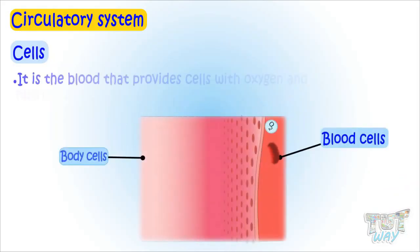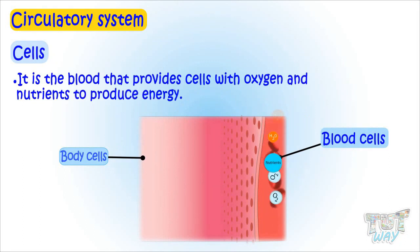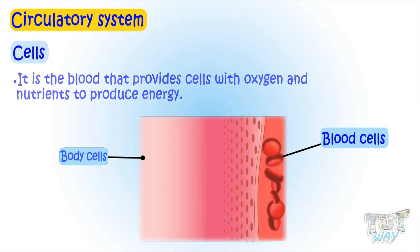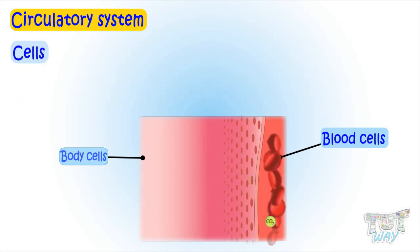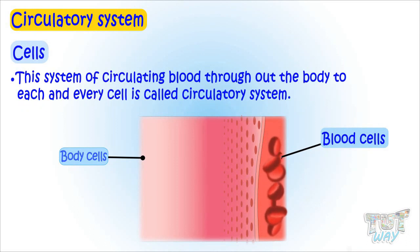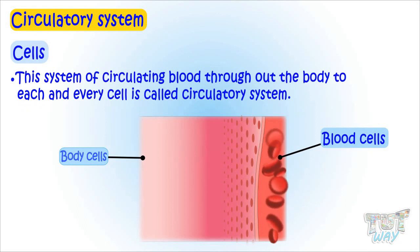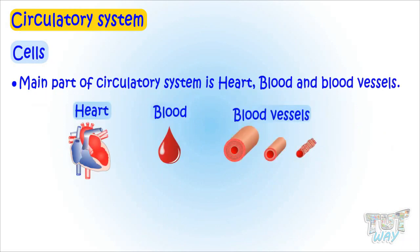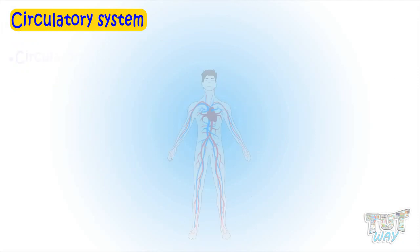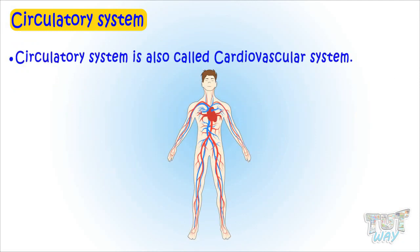It is the blood that provides cells with oxygen and nutrients to produce the energy that we need in our daily lives for every activity. And it's also the blood that removes the waste and carbon dioxide from the cells. This system of circulating blood throughout the body to each and every cell is called the circulatory system. Its main parts are the heart, blood, and the vessels — which can be arteries, veins, or capillaries. The circulatory system is also called the cardiovascular system.